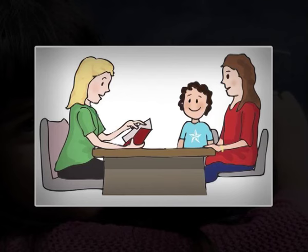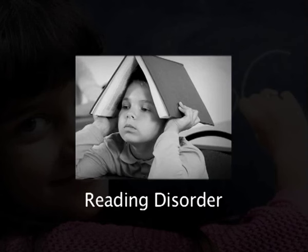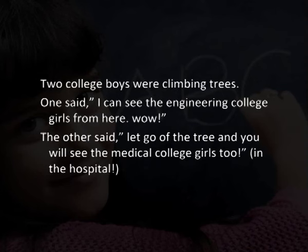There is a very small paragraph: 'Two college boys were climbing trees. One said, I can see the engineering college girls from here. The other said, let go of the tree and you will see the medical college girls in the hospital too.' This is a simple paragraph, but see how a child who has dyslexia — the reading problem — experiences it. The number of letters may be the same, but the order has changed, so when the child reads it that way it makes no sense to him and soon he gives up, saying 'I just don't know how to read.'